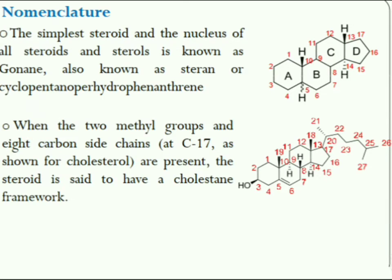Next is the nomenclature of steroids. Gonane is the term used for the nucleus of all steroids and sterols. It is a tetracyclic hydrocarbon with no double bonds, and is formally the parent compound of the steroids. Its carbon skeleton is called the steroid nucleus. Steroids are also named as steran or cyclopentano-perhydrophenanthrene. Steroids having two methyl groups and an eight-carbon side chain at the 17th position are named as cholestan.